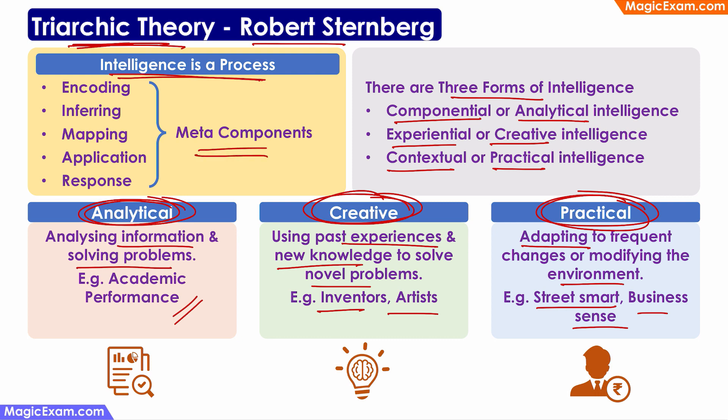The first is the ability to encode some information, then to infer that information and to map it into a schema in your brain, and then apply that information where it is required to respond to a situation or to a problem.